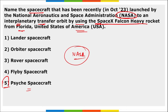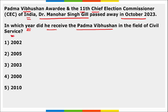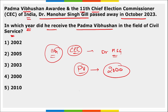Next, Padma Vibhushan awardee and 11th Chief Election Commissioner of India, Dr. Manohar Singh Gill, passed away in October. In which year did he receive the Padma Vibhushan in civil services? He was honored with Padma Vibhushan in the year 2000. He is the 11th Chief Election Commissioner of India. He passed away at the age of 87 in New Delhi. He was born in 1936 in Punjab, India, and had a distinguished career as an Indian bureaucrat, politician, and writer.